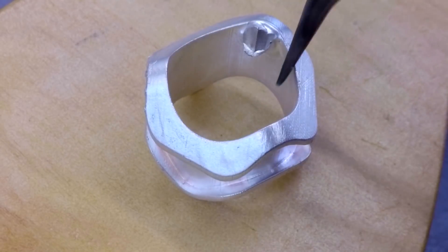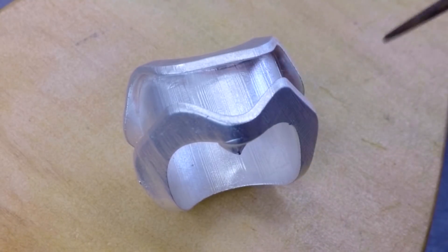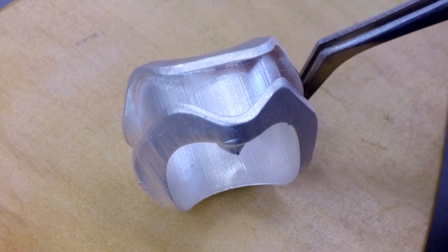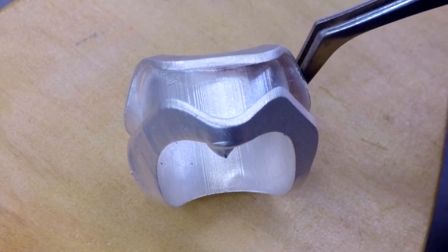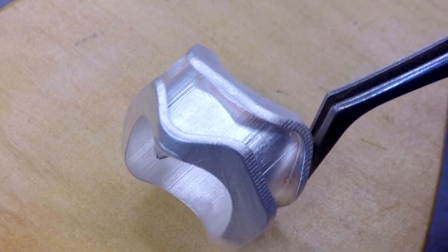The geometric ring feels really heavy and solid. Unfortunately, all of the layer lines have transferred into the casting. We can print at reduced layer height, but what we really should have done is some more post-processing before we sent it off.